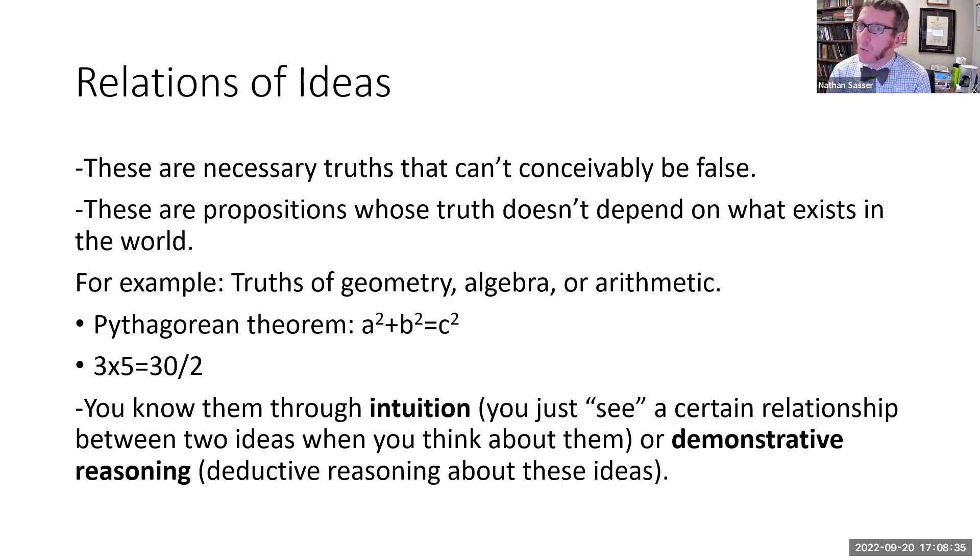When Hume talks about relations of ideas, he really means necessary truths that can't conceivably be false. These are propositions whose truth doesn't even depend on what exists in the actual world. For example, truths of geometry or algebra or arithmetic. Take, for example, the Pythagorean theorem, which describes the relationships between the sides of a triangle: A squared plus B squared equals C squared. The Pythagorean theorem is true even if there are no actual triangles in the world. The mere idea of what a triangle is entails the truth of the Pythagorean theorem. So it expresses a relation between ideas.